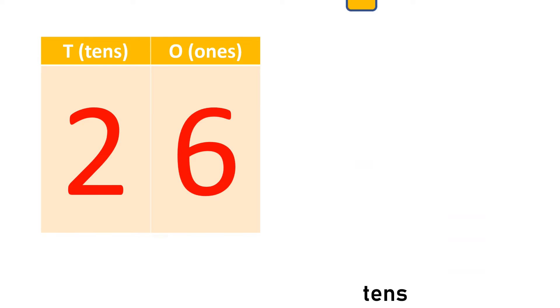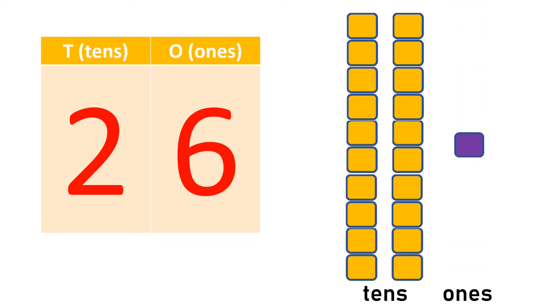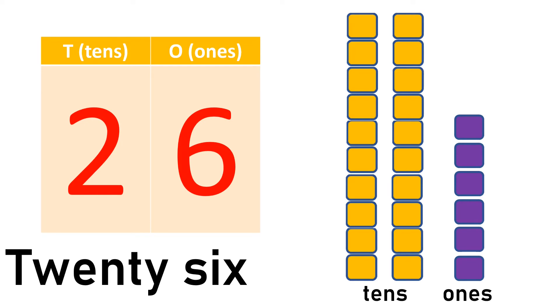2 tens and 1, 2, 3, 4, 5, 6, 6 ones makes 26, TWENTY-SIX.